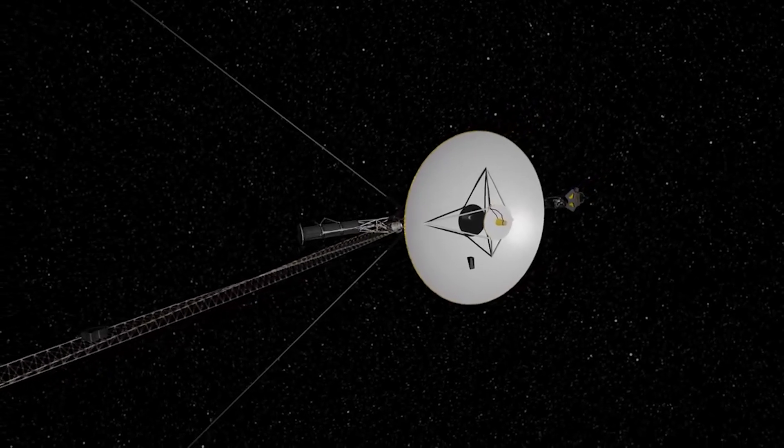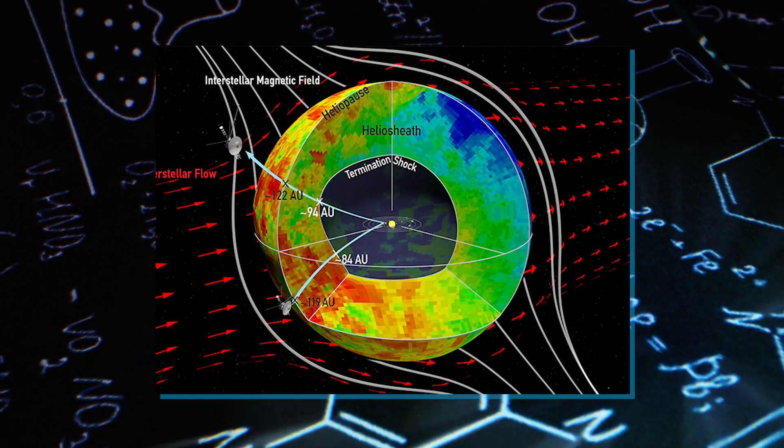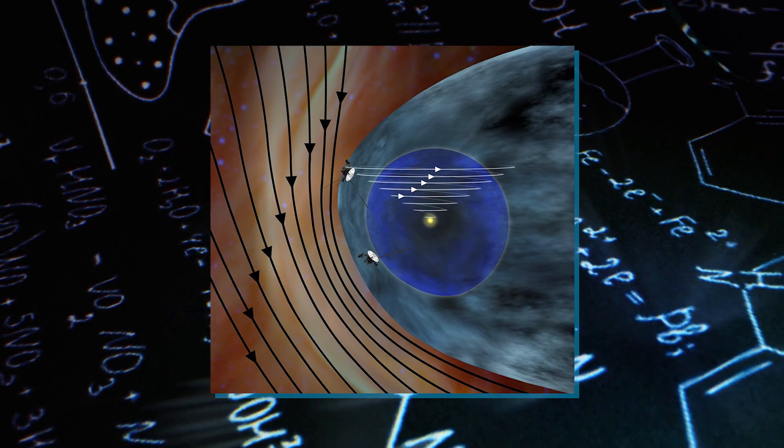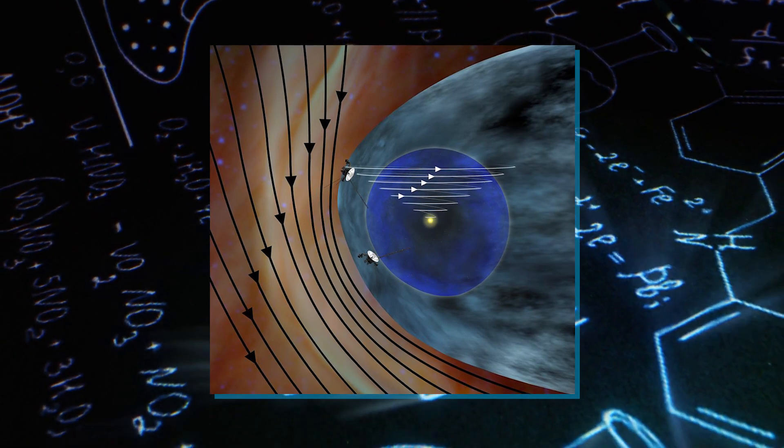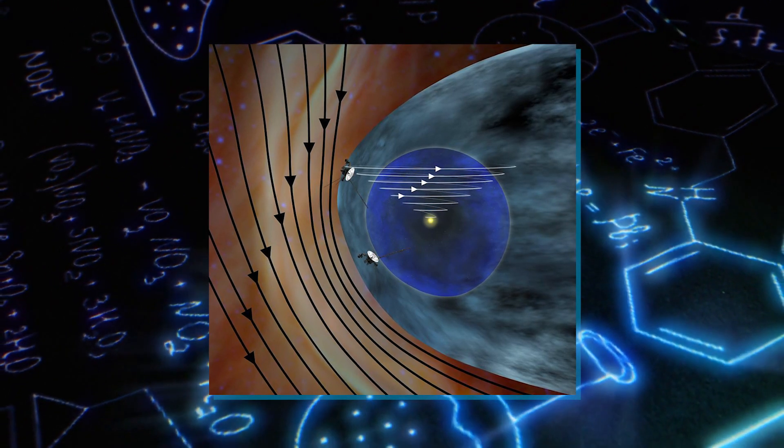The Voyager probes have provided valuable data on the magnetic fields within the heliosheath. Understanding how solar wind interacts with the interstellar medium greatly relies on these magnetic fields.